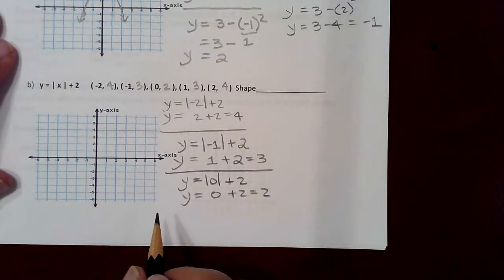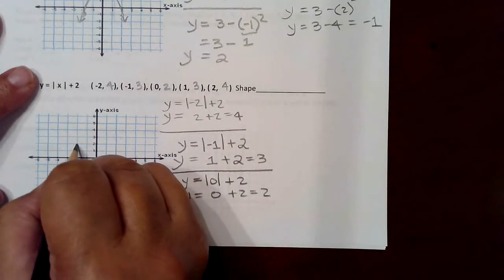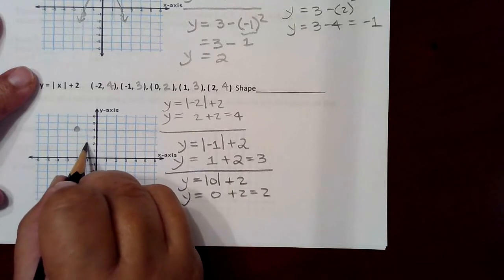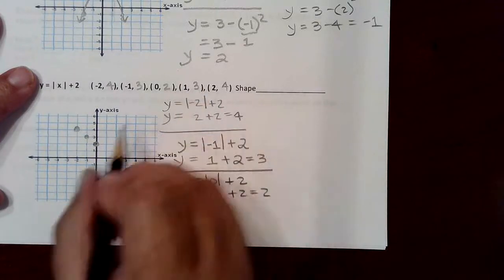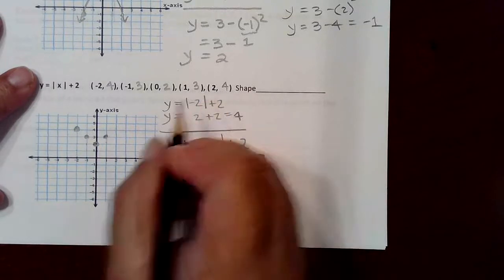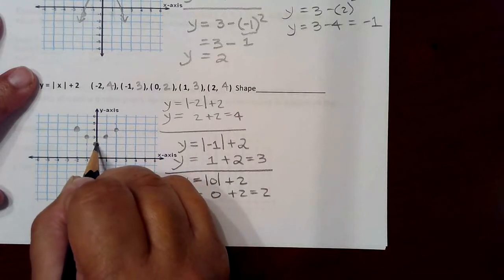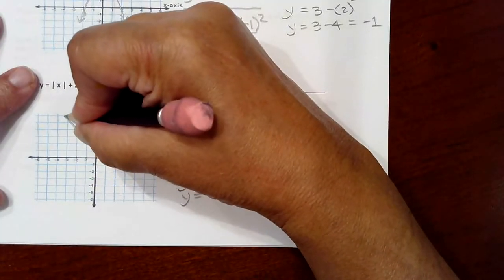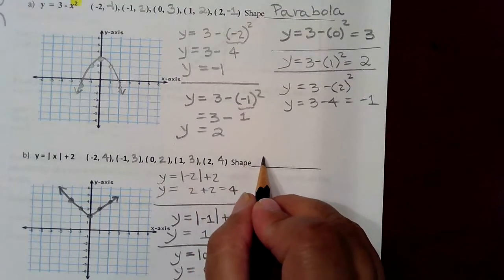Go plot these points. (-2, 4), so that's going to be 1, 2, 3, 4 right there. And then (-1, 3), 1, 2, 3. Then (0, 2) right there. Then (1, 3), 1, 2, 3. And then (2, 4). See how you have that nice absolute value shape. So we've done the parabola. We've done the absolute value graph.